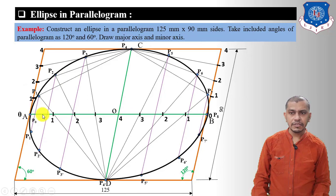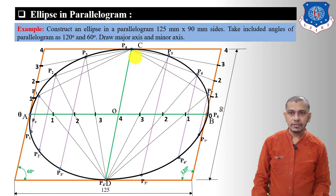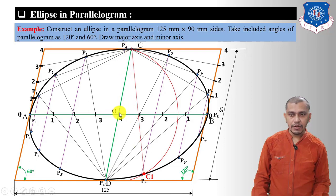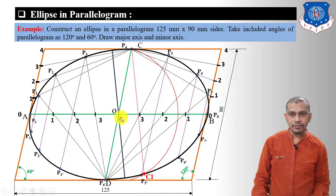This is the ellipse in the parallelogram. Since AB and CD are not the actual major and minor axes, we need to find them. Place the compass at center O with radius equal to OC, draw an arc on the curve, and mark the intersection point C1. Connect C1 to C, then draw a line parallel to CC1 from center O — this line will be the minor axis of the ellipse. A line perpendicular to this line passing through O will be the major axis.